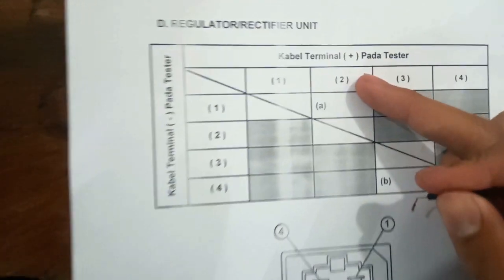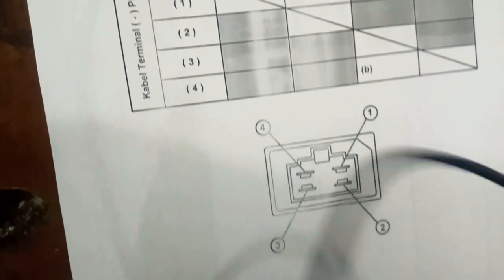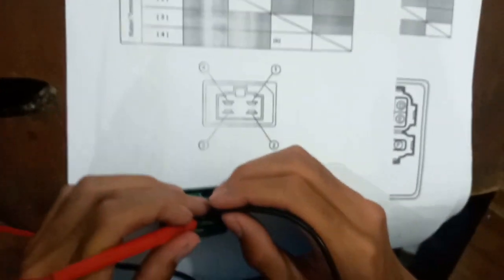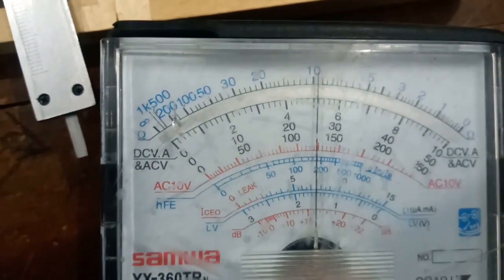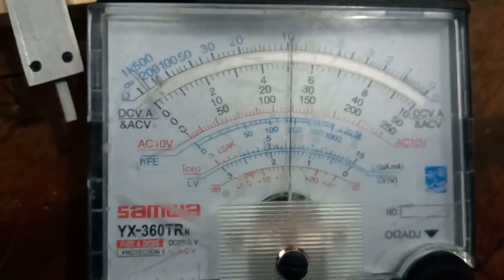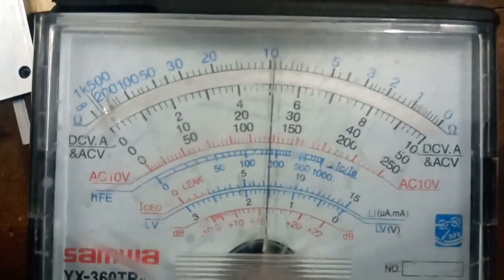Nomor A. Ini dua yang positif dan satunya yang negatif. Dua positif. Ini kita hitung. Mari kita lihat, kasih pengukurannya. Itu di tengah-tengah, itu di angka 10 ya, guys. Jadi ya 10 kurang sedikit.